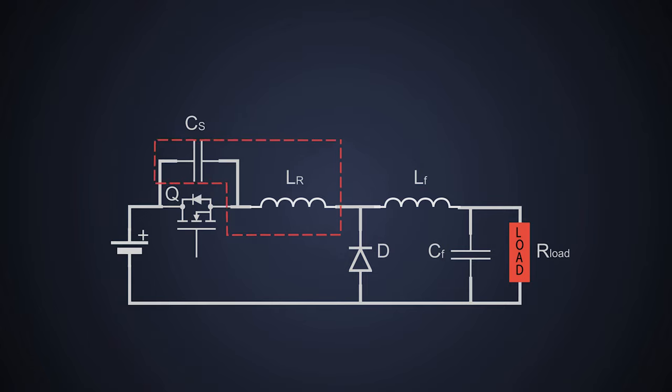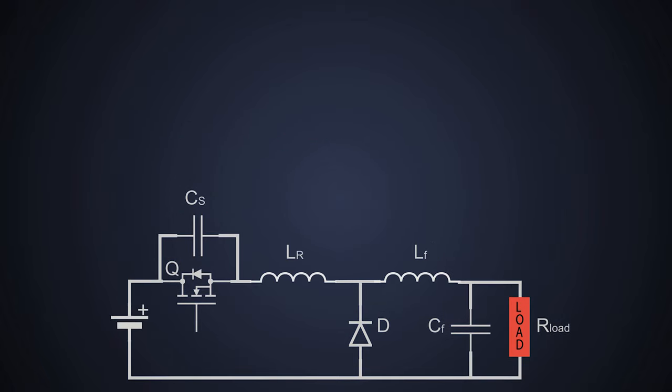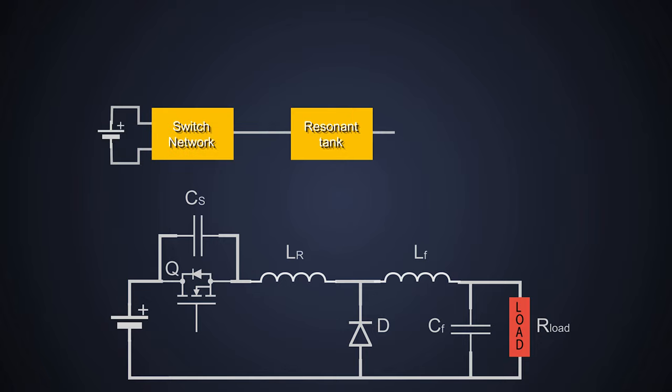The PWM strategy of the converter is designed in such a way that the resonant circuit goes into resonance. Every resonant converter consists of three blocks: switching network, resonant circuit, and finally the rectifier circuit or filter circuit.